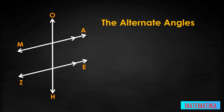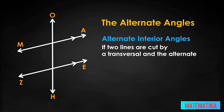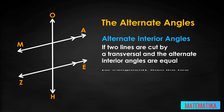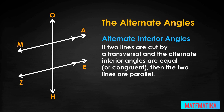Just like the exterior angles, the four interior angles have a theorem and converse of the theorem. We are interested in the alternate interior angle converse theorem: if two lines are cut by a transversal and the alternate interior angles are equal or congruent, then the two lines are parallel. In our drawing, if angle D is congruent with angle J, lines MA and ZE are parallel. Or, if angle F is equal to angle G, the lines are parallel. Again, you need only check one pair of alternate interior angles.